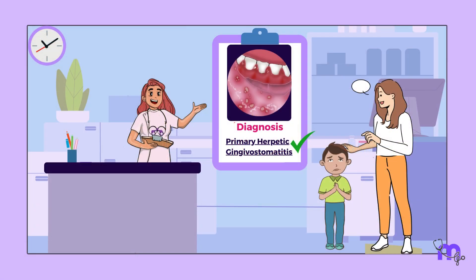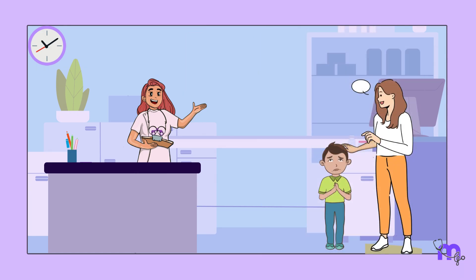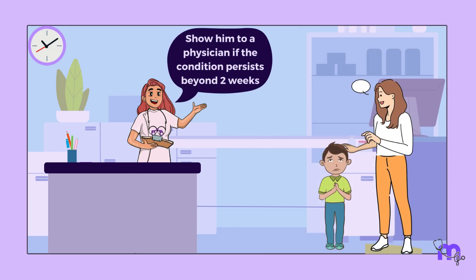Now let us move on with the case of Ajo. As the diagnosis was established within 3 days of onset, I prescribed acyclovir, 15 mg per kg, 5 times daily for 7 days, along with advising them to see a physician if the condition prolonged beyond 2 weeks.